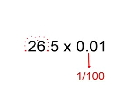The next sum will be 26.5 multiplied by 0.01. This way it will be that 0.01 will be over 100. So you move the decimal place two places to the left. So the answer will be 0.265.